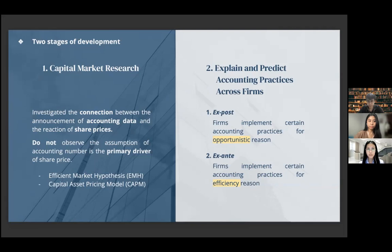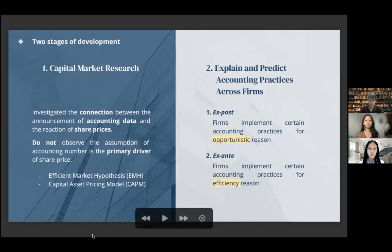The next stage is to explain and predict accounting practices across firms. The first is ex post, where the firm, even after they have contracted the manager, still acts in opportunistic behavior because they act in their own interest to transfer wealth to themselves. The second is ex ante, where the managers and owners sign a contract that will benefit the efficiency of the firm and reduce the cost of contracting between them. These two theories are not mutually exclusive.